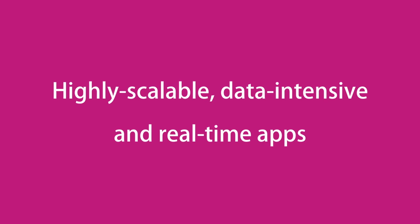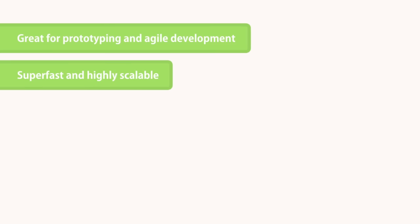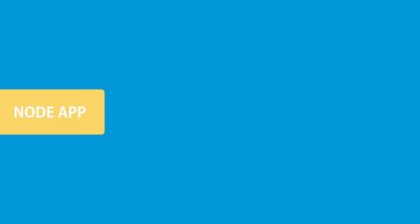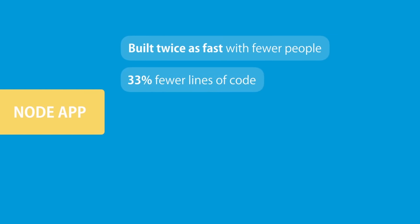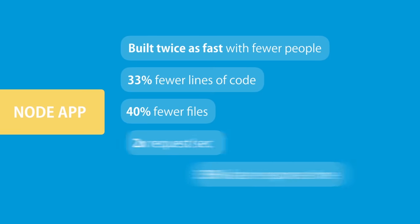You might ask: there are other tools and frameworks for building back-end services such as ASP.NET, Rails, Django, and so on — so what's special about Node? Node is easy to get started with and can be used for prototyping and agile development, but it can also be used for building super fast and highly scalable services. It's used in production by large companies such as PayPal, Uber, Netflix, and Walmart. At PayPal, they rebuilt a Java and Spring application using Node and found it was built twice as fast with fewer people, 33% fewer lines of code, 40% fewer files, while doubling requests served per second and decreasing average response time by 35%.